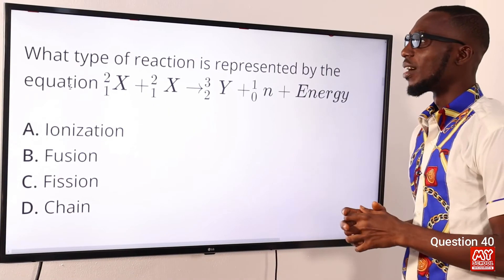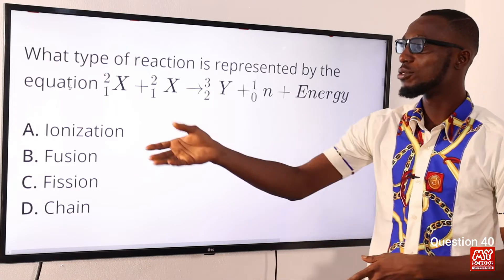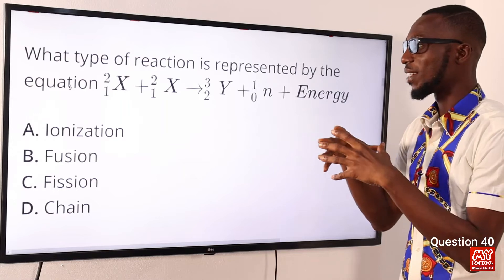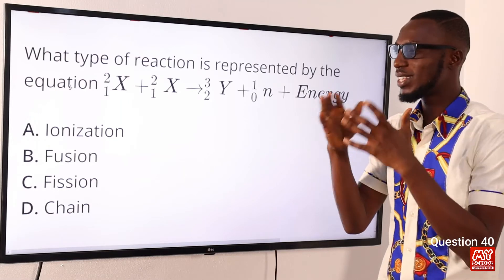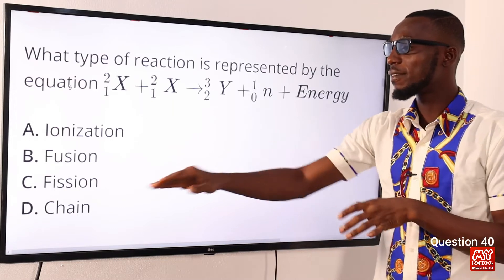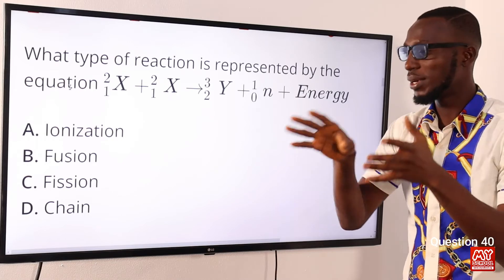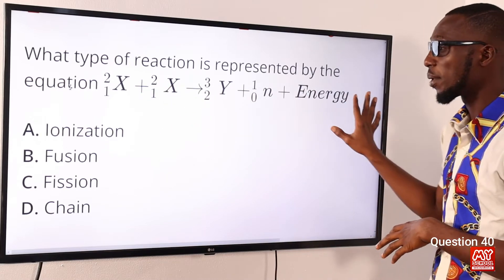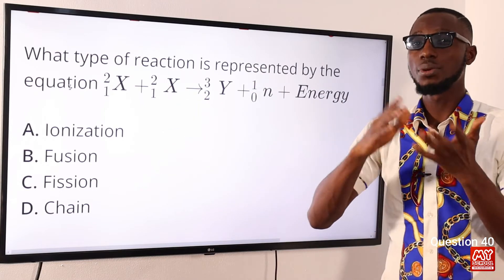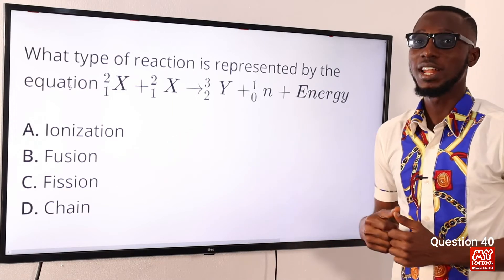Question 40. What type of reaction is represented by the equation? We have deuterium, deuterium, then we have this. You can see 2 small nuclei come together to form a bigger nucleus. So, this tells you about nuclear fusion. When you talk about fission, you are breaking heavy nucleus into 2 smaller nuclei. So, this is the equation for nuclear fusion. The correct option is option B for nuclear fusion.